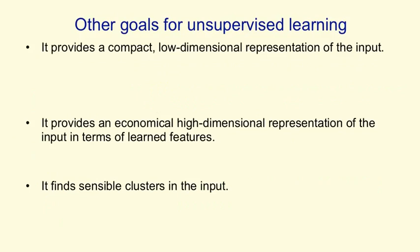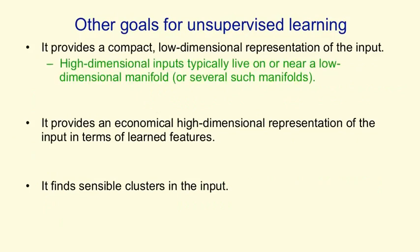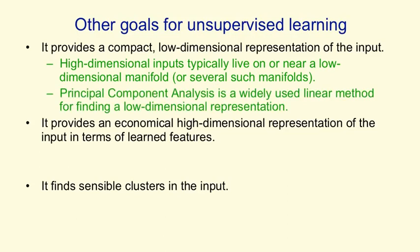Other goals for unsupervised learning are to provide compact, low-dimensional representations of the input. High-dimensional inputs like images typically live on or near a low-dimensional manifold, or several such manifolds in the case of handwritten digits. Even if you have a million pixels, there aren't really a million degrees of freedom — there may only be a few hundred. We want to move from a million pixels to a representation of those few hundred degrees of freedom, equivalent to saying where we are on a manifold, and also which manifold we're on. A very limited form of this is principal components analysis, which is linear and assumes one manifold that is a plane in the high-dimensional space.